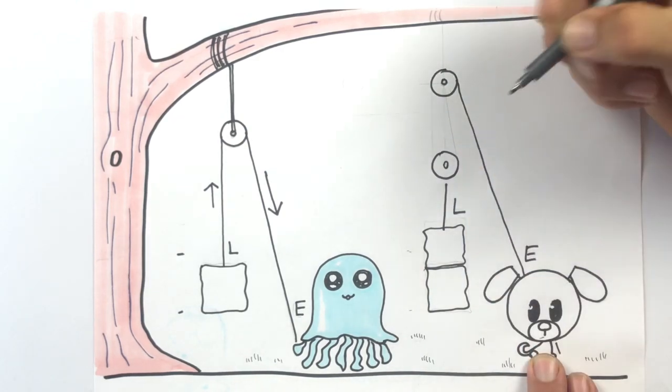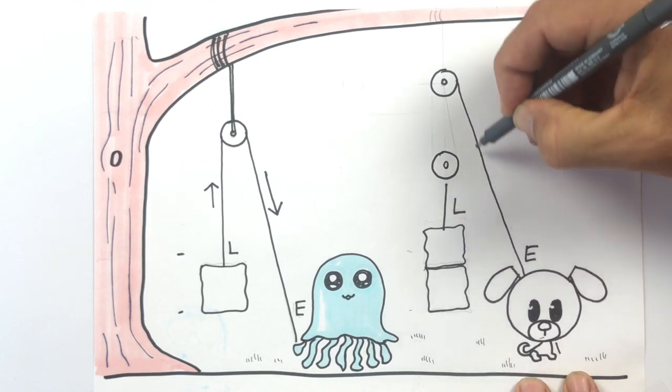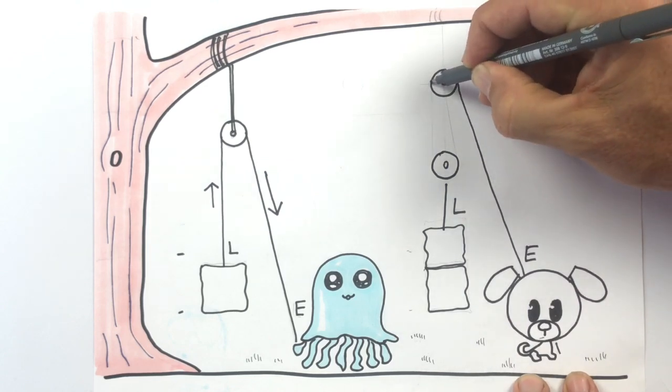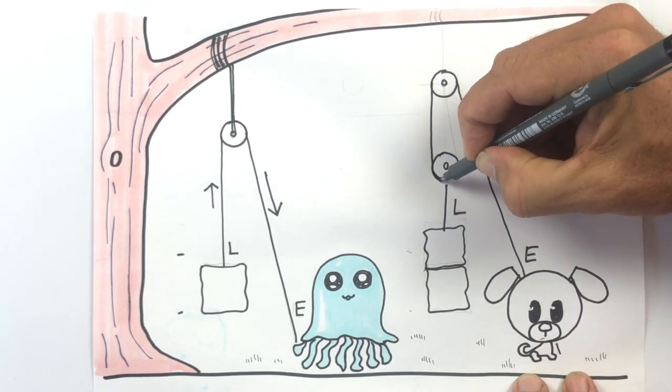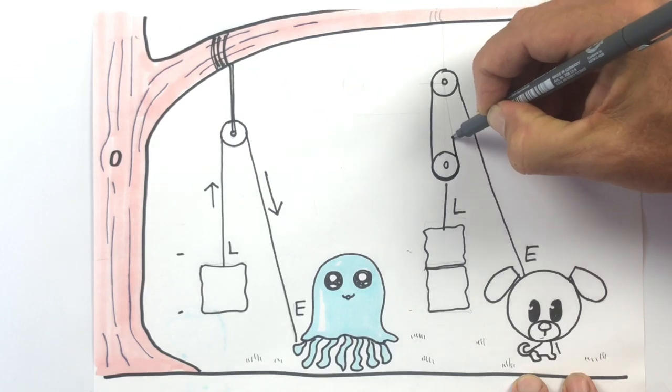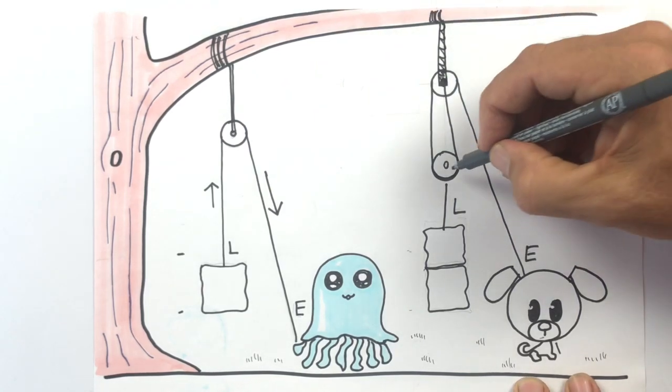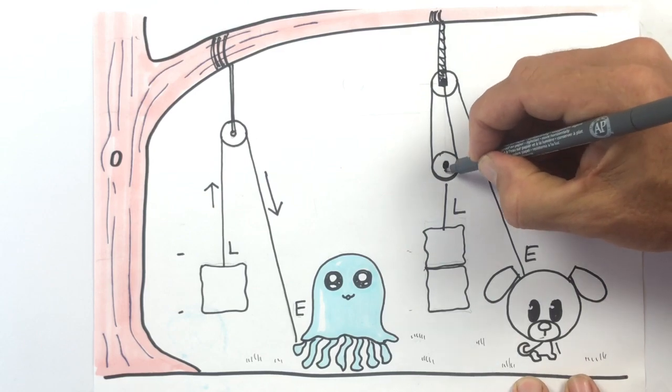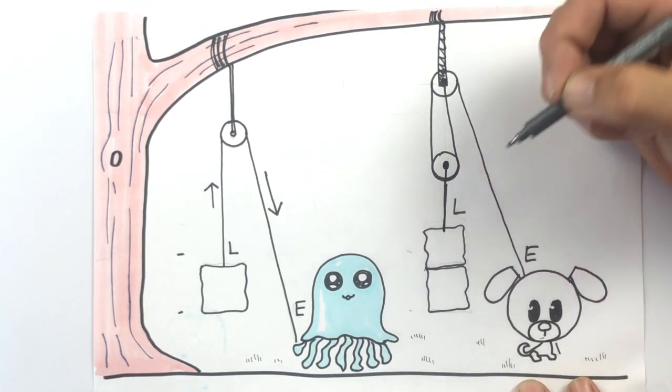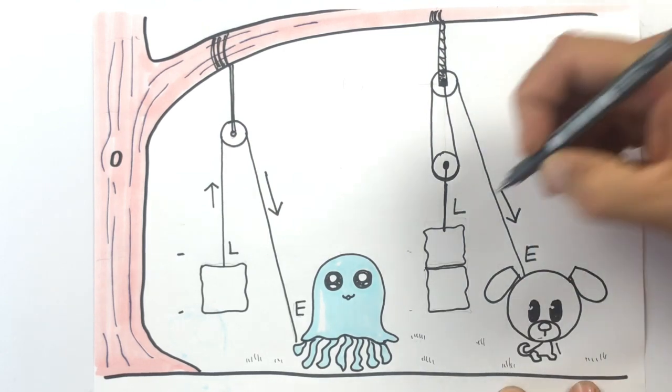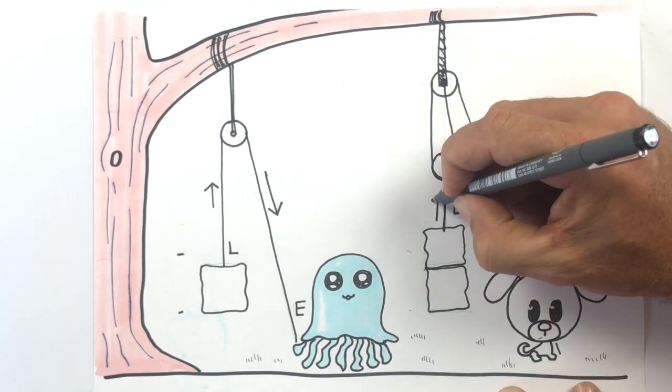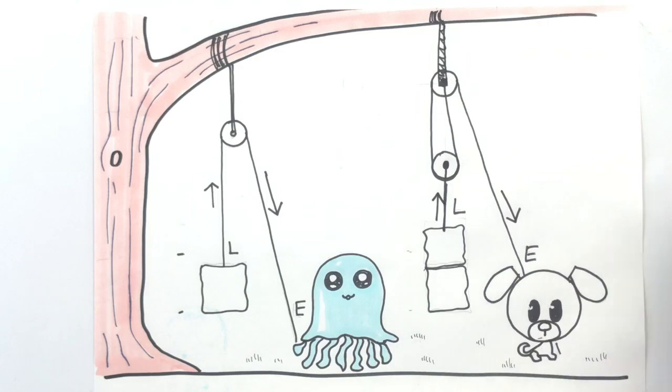Let's use a second pulley. Run the rope over the first one. Down to the second pulley. Around. And we're going to tie it in the middle of the top one. Let's attach that to the tree. Let's attach the load to the bottom pulley. So when Parker pulls down, we know the load will move up. But will it be easier or harder?